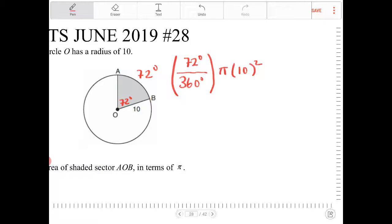So what is this? 72 over 360. Nine goes into both 72 and 360 so I get 8 over 40 and this is actually just one-fifth. So this is going to be one-fifth pi times 100 because 10 squared is 100 and we end up with 20 pi. So the answer is 20 pi.